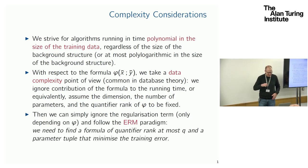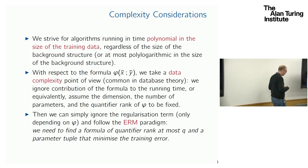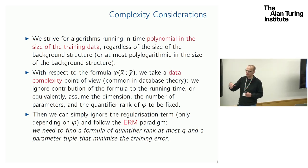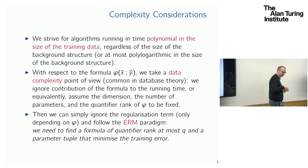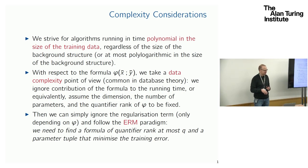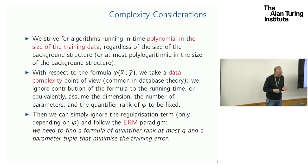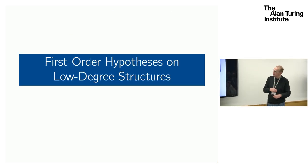If we fix the formula, basically we can ignore regularization, so we just do empirical risk minimization. The algorithmic problem we have to solve is: given the background structure (which we can't fully see but is somehow there), given the training examples, find a formula of some fixed quantifier rank and a tuple of parameters such that the training error is minimized. Through the VC dimension results, we can then hope that it generalizes fairly well. That's the setup. Now let me look at some results.